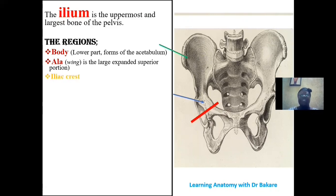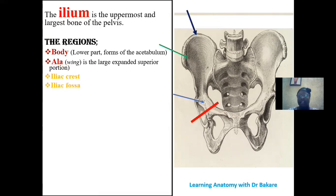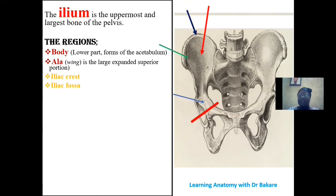The iliac crest is the most superior edge of the ala or wing, and serves for muscle attachments. The iliac fossa is an indentation seen on the anterior part of the ala, which is filled with the iliacus muscle. Posterior to the ala is where the gluteus muscles attach.